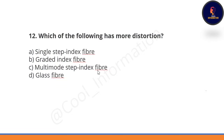Which of the following has more distortion? Option A: single step index fiber. Option B: graded index fiber. Option C: multimode step index fiber. Option D: glass fiber. Both options B and C may be confusing, but the correct option is C — multimode step index fiber.